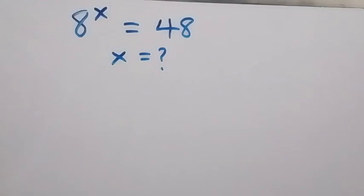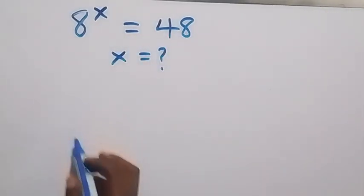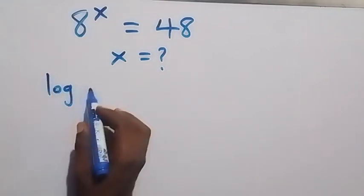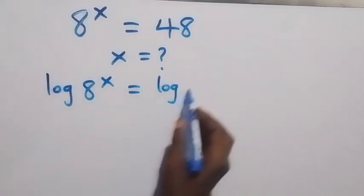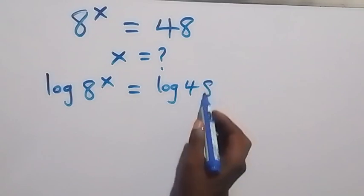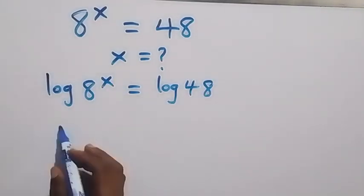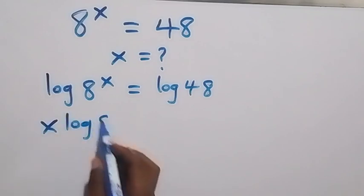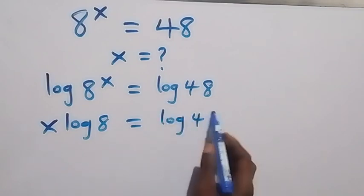Hello, you are welcome here. Let's solve this nice exponent equation. We have 8 raised to power x equals 48. We can take the log on both sides and we have log 8 raised to power x equals log 48. Applying the power law of logarithms, we take x to the front and we have x log 8 equals log 48.